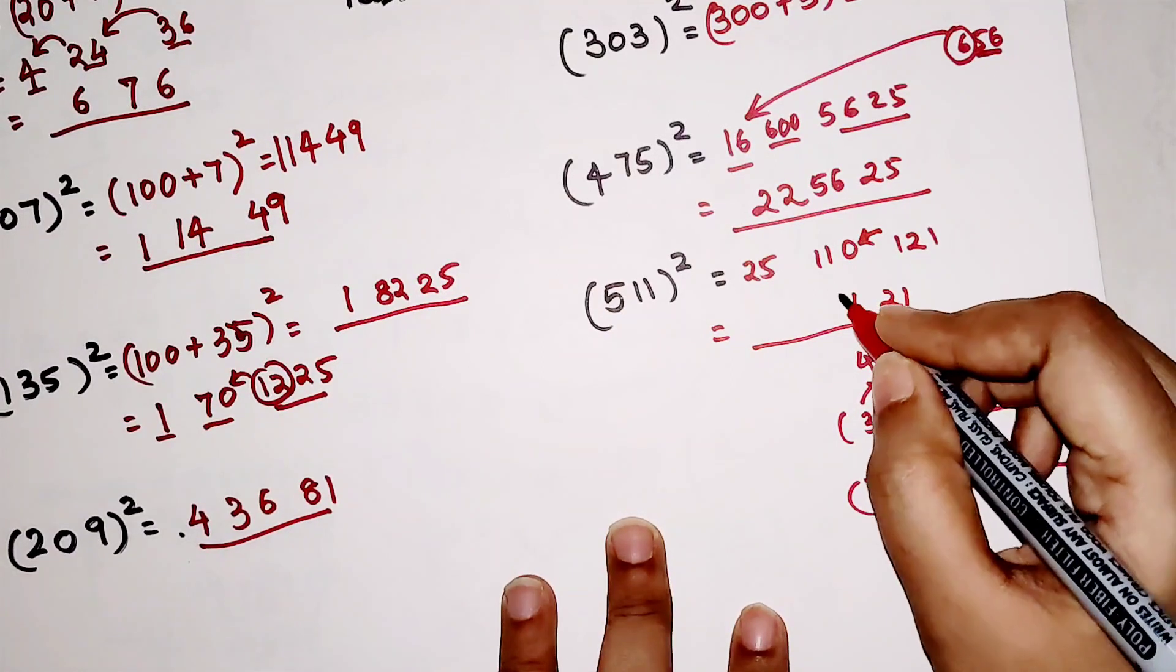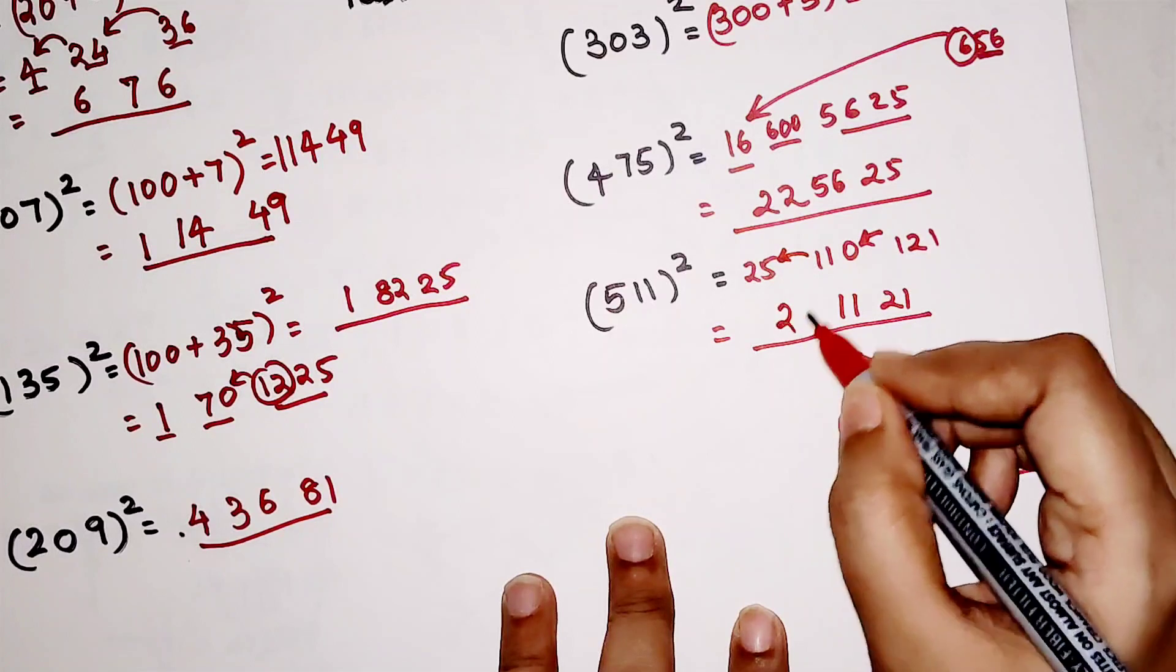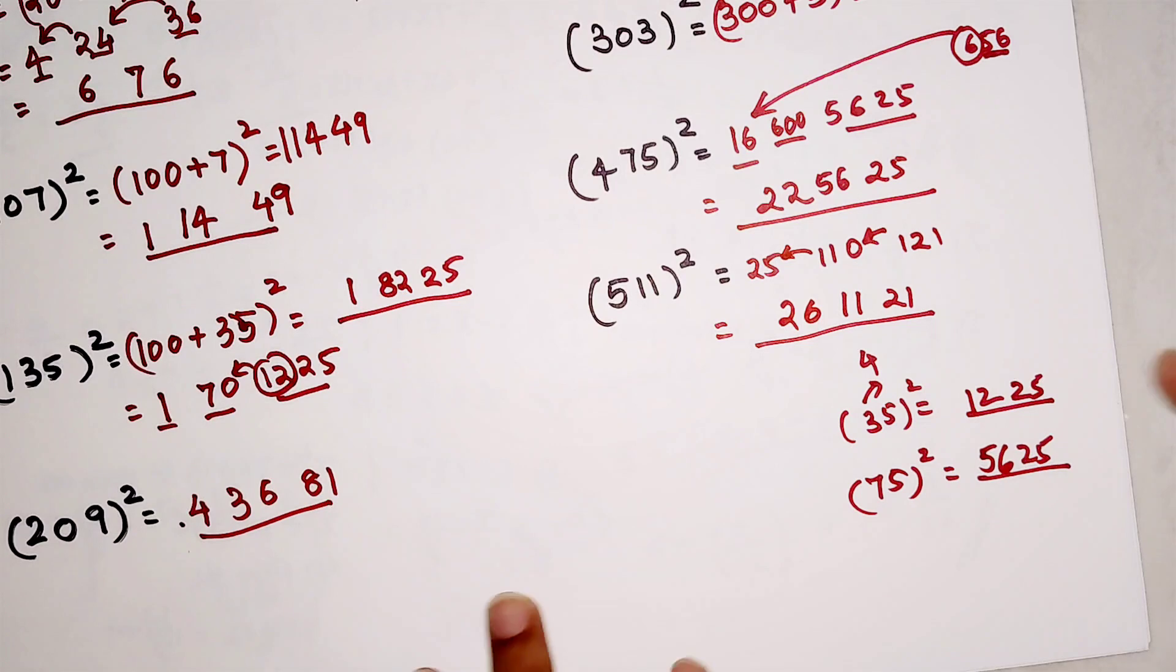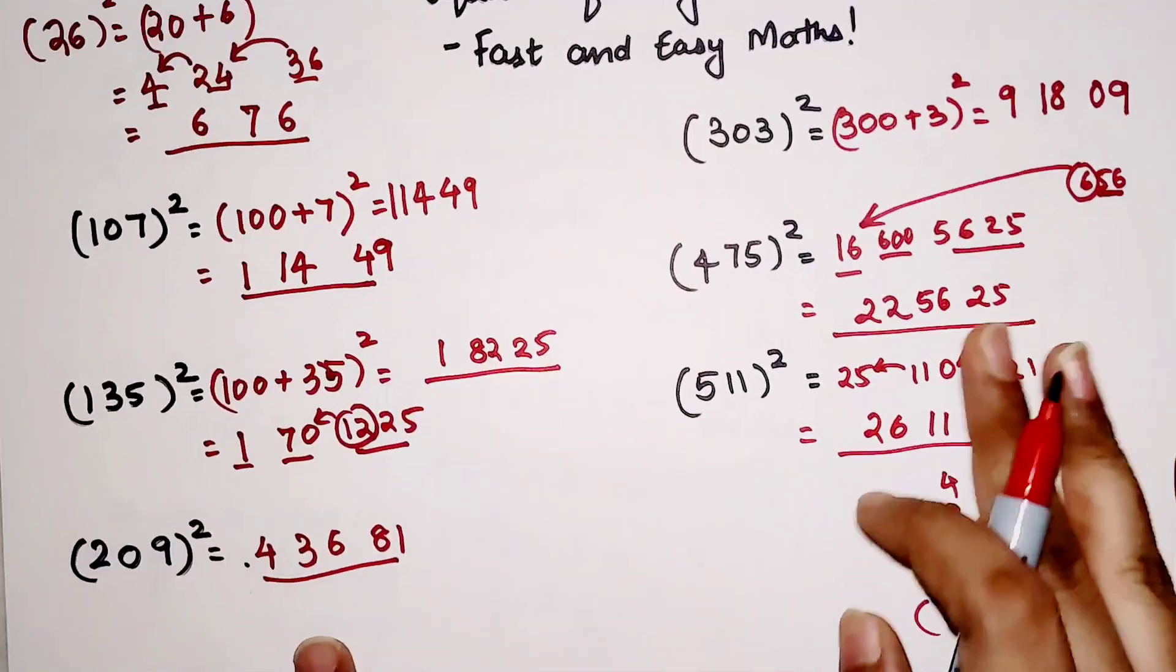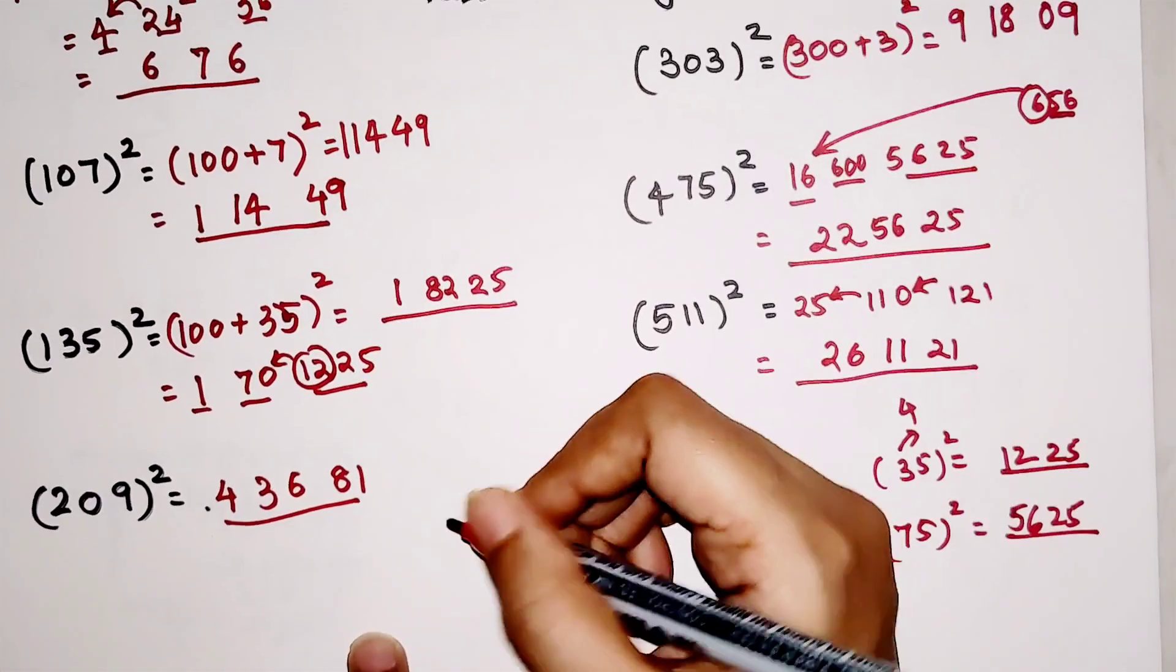So 11 will be taken from here and 1 will get added over here, so you are 26. So answer for this one is 261,121. I hope you all are getting this particular trick. In case you have any other queries, please let me know in the comment section.